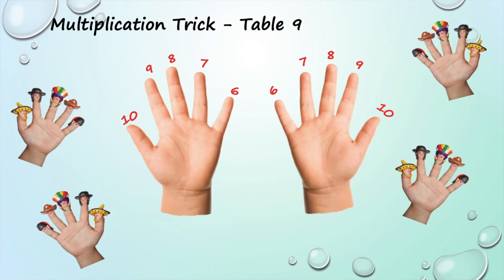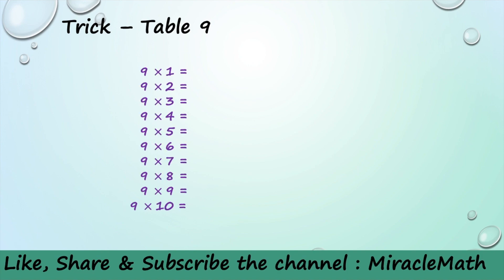I am going to show you a really easy way to determine the answers for table 9. Let's start from the top, that is 9 times 1, and then we go down to get the answers. We start with 0, 1, 2, 3, 4, 5, 6, 7, 8, and 9.